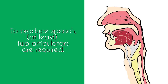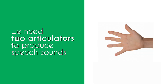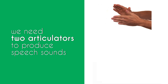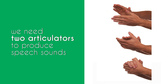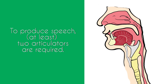When articulation happens at a place of articulation with two articulators — why do we need two? Because one hand doesn't make a sound; you need two hands to clap. In the same way, you need two articulators to come together to form a speech sound.